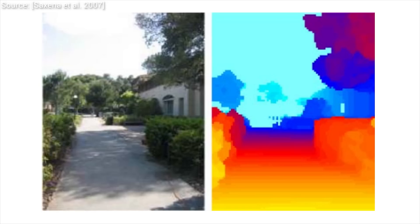An example output looks like this. On the left there is an input photograph, and on the right you see a heat map with true distance information. This is what we are trying to approximate. This means that we collect a lot of indoor and outdoor images with their true depth information and we try to learn the correspondence — how they relate to each other.